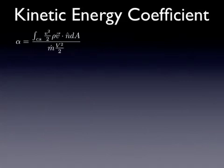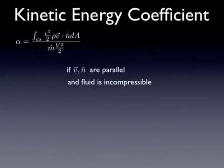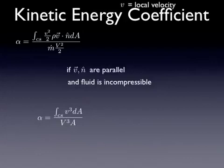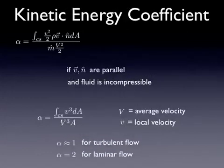The alpha is called a kinetic energy coefficient, and it can be calculated with that formula there, which is actually quite complicated. It's got several vectors and dot product in it and integral. If the velocity vector and the unit normal vector of the surface are parallel, meaning if we've drawn a control volume so that the flows are perpendicular to the surface, and if the fluid is incompressible, if we can make those two assumptions, and those are easy assumptions to make, this then reduces to something a lot more manageable, where alpha is simply the integral over the control surface of the local velocity cubed divided by the average velocity cubed and the surface area.